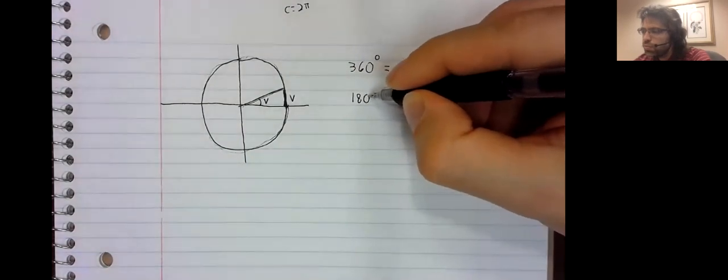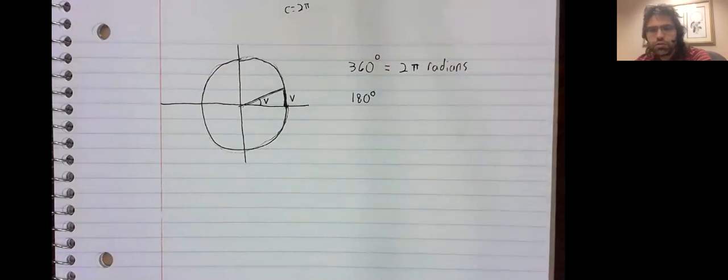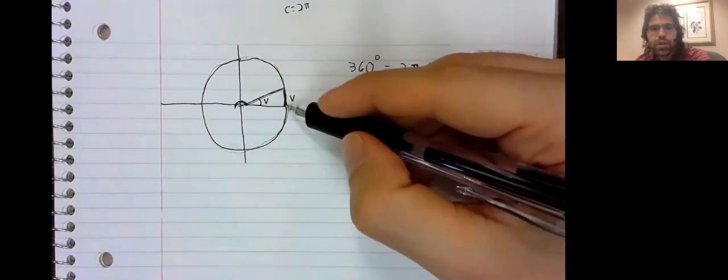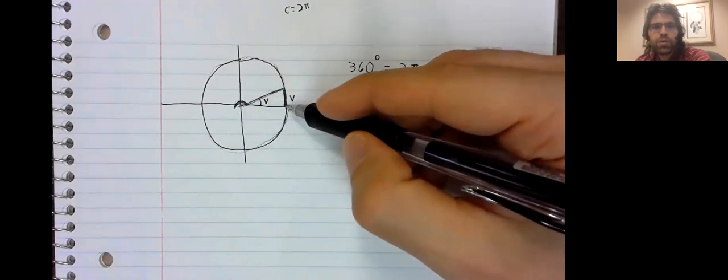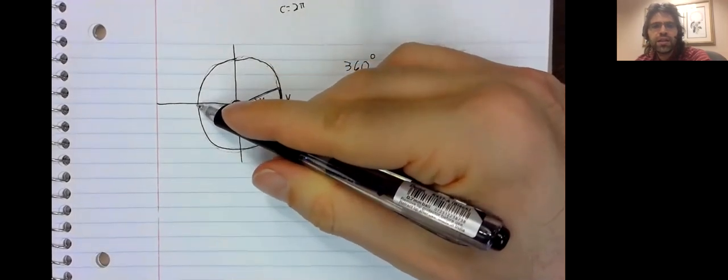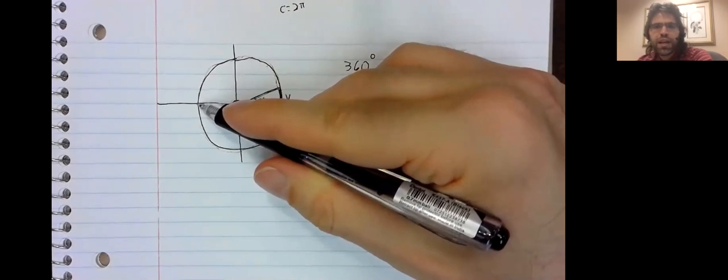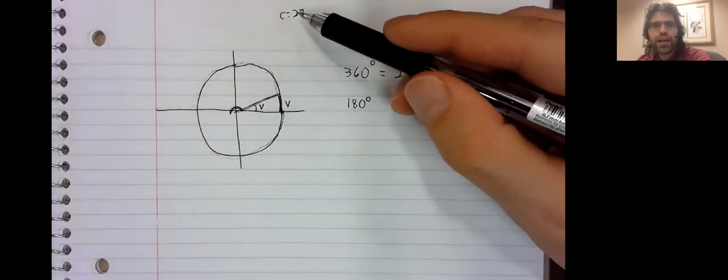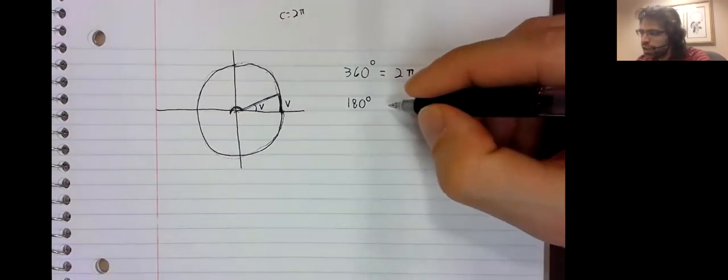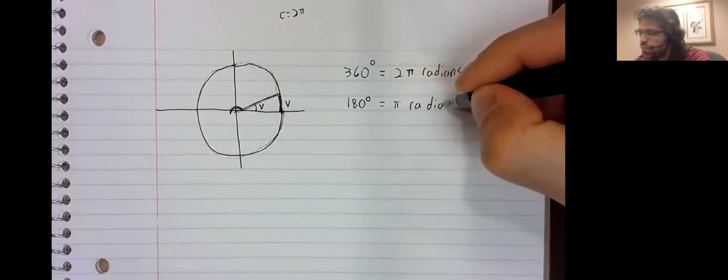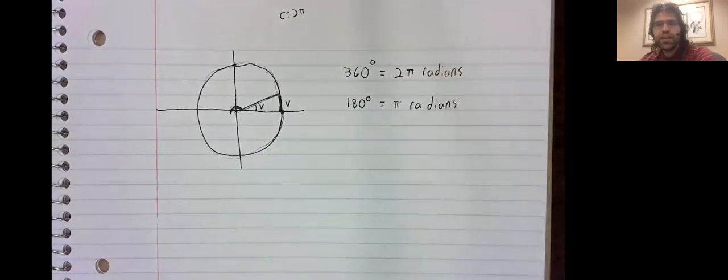What about 180 degrees? What about this angle? Well, this angle is formed by traveling from here all the way to here. In other words, by traveling halfway around the circle. Halfway around the circle is half the circumference. So 180 degrees is pi radians.